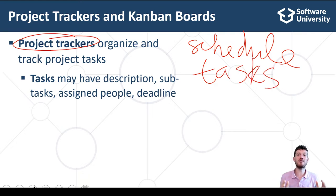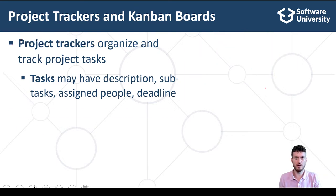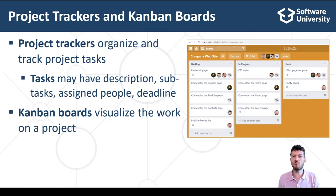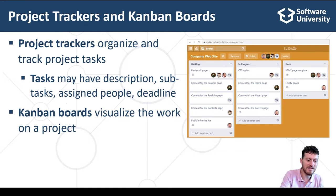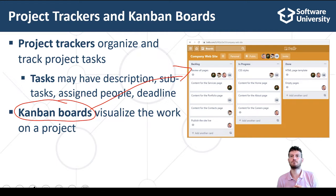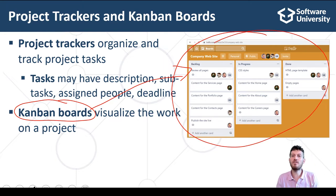Project trackers are important concepts in software project management and in project management in general. Most project trackers visualize and organize the work of a project as a Kanban board. A Kanban board is an agile project management tool designed to help visualize work, limit work in progress, and maximize team efficiency.